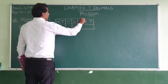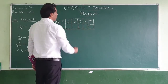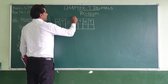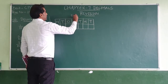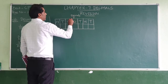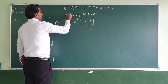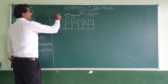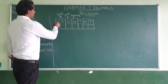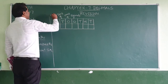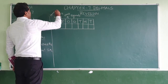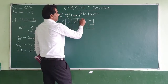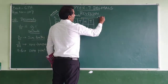In the table: D means decimals, O means ones, H means hundreds — that means hundreds, T means tens.